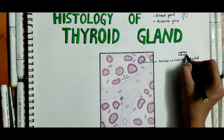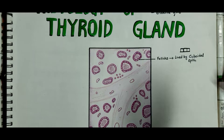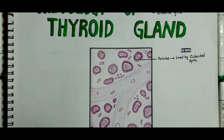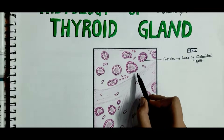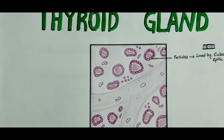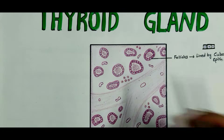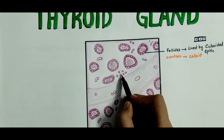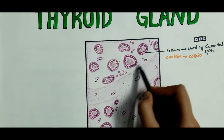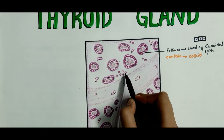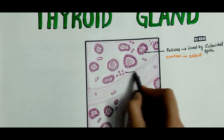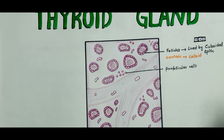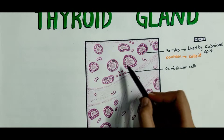This is the basement membrane and these are the cuboidal cells. The nucleus of the cuboidal cells is round in shape. Each follicle is filled with the homogeneous colloid, a proteinaceous material that composes the hormones, and this colloid is produced by these epithelial cells. The parafollicular cells are present in relation to the follicles and also present as groups in the connective tissue.